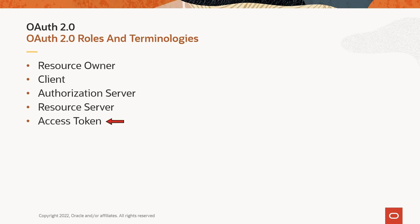The access token carries the information necessary to access a resource directly. Oracle Access Manager, as the OAuth service, generates the access token. The client passes an access token to the resource server when it requests access. The resource server validates the access token and provides access. Access tokens usually have an expiration date and are short-lived.